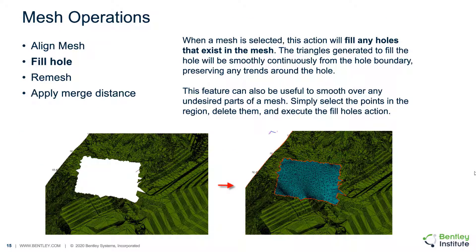The Fill Hole operation is designed to fill places in a surface mesh which may be an undefined hole in the mesh. Interpolation is used in the Fill Hole function to calculate node elevations. It is important to note that the functionality can be utilized to smooth over undesired parts of an existing mesh. The user can execute the Fill Holes action to fill in the mesh using interpolation based on the adjacent areas.